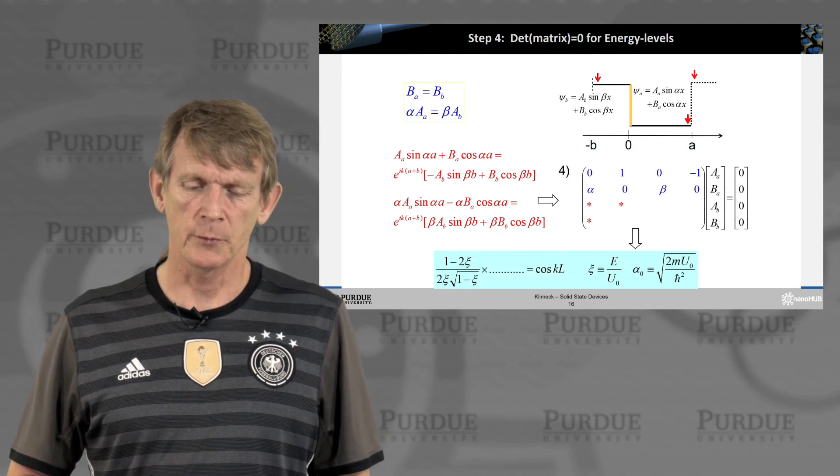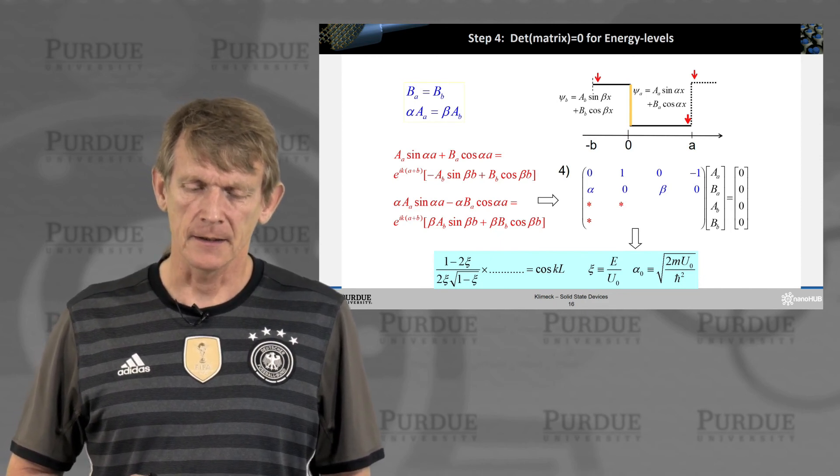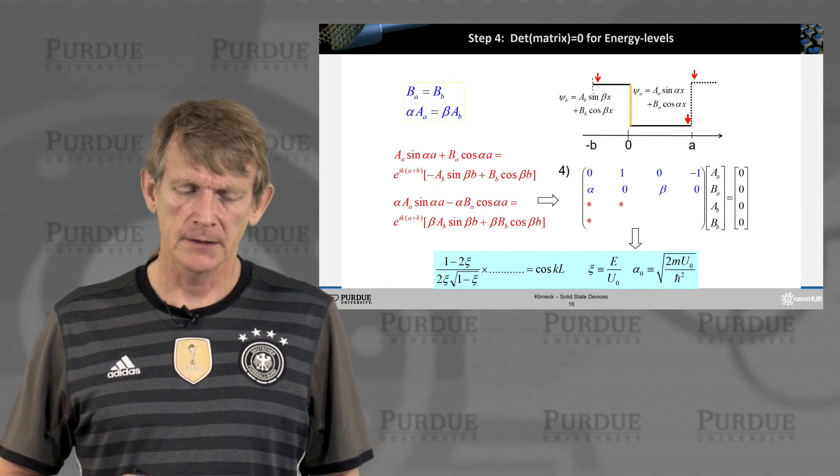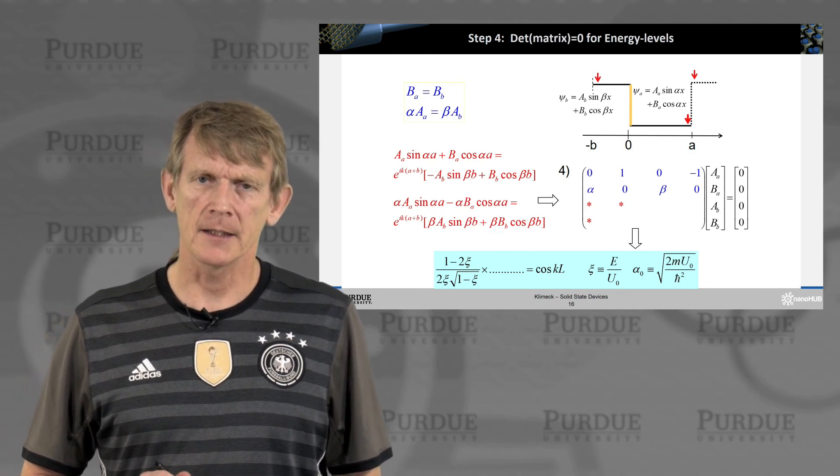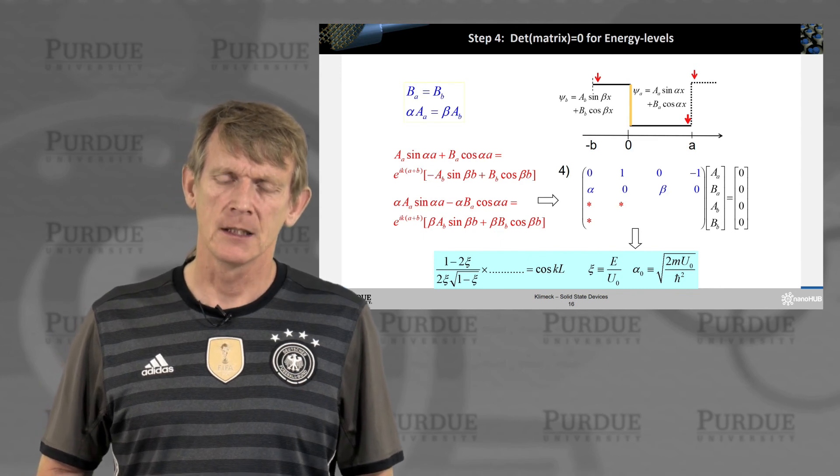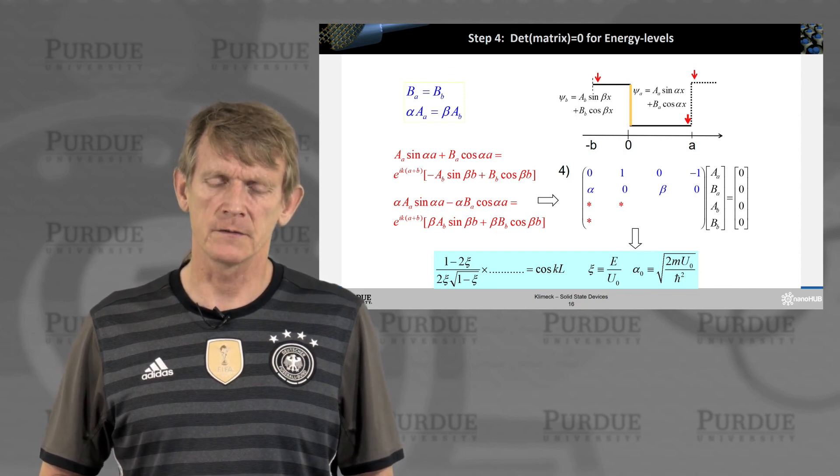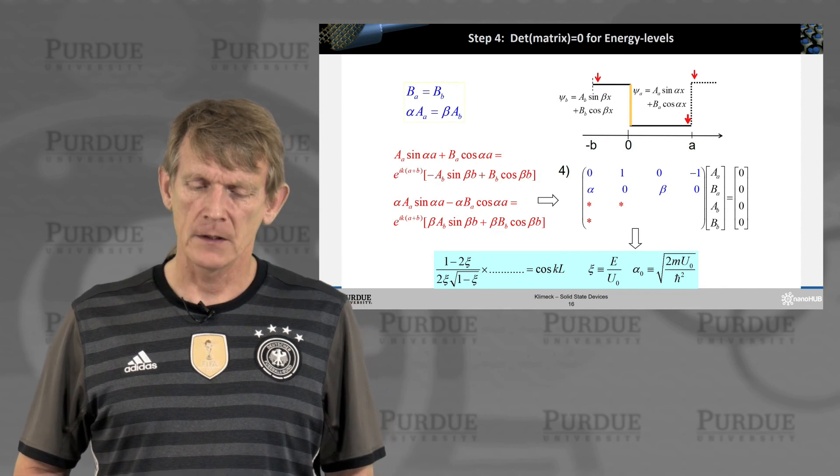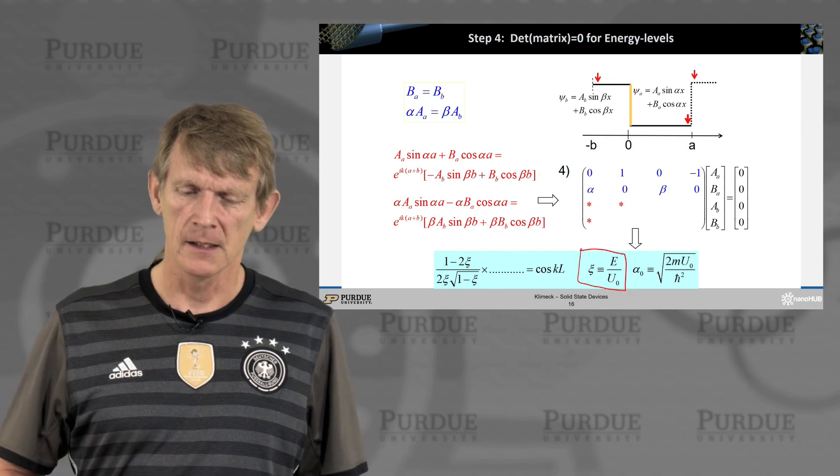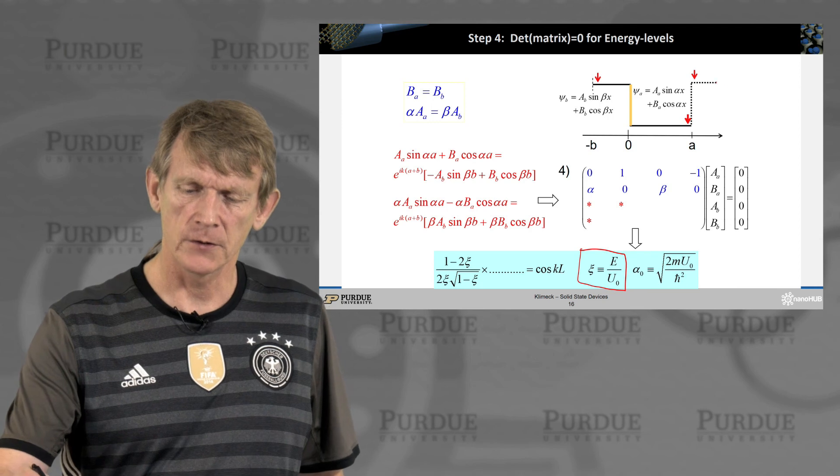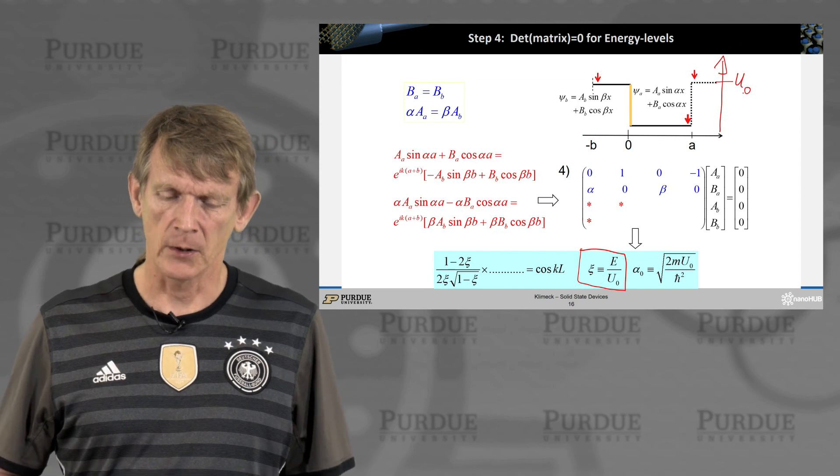So, we cast this expression again in a matrix form, and in this matrix form we can find a somewhat analytical solution. But it is rather complicated looking, and you only get an analytic expression. To find the solution, you need to use a graphical methodology or a numerical methodology to find the roots of these equations. Similar to what we had before, it is useful to define a unitless quantity, psi, that normalizes the energy of the electron versus the height of this barrier here called u in this case. And the propagation constant, and in this case the decay constant in the barrier, is 2m u0 h-bar squared.